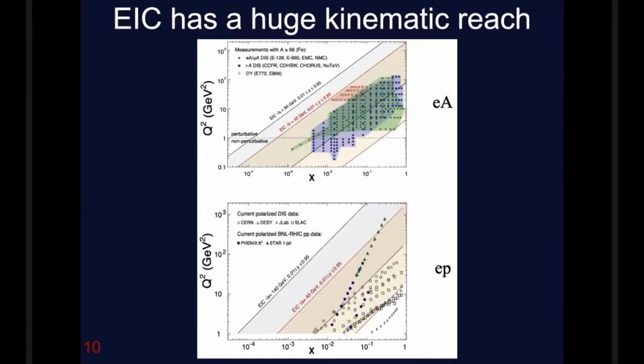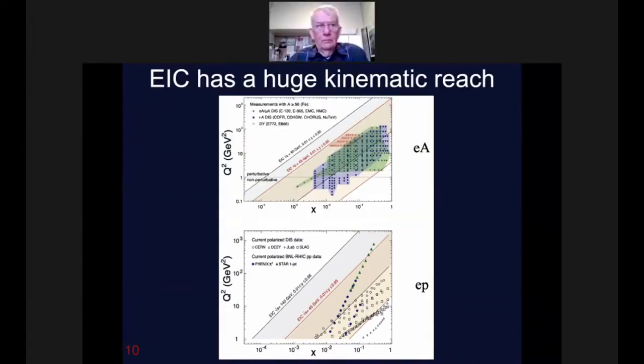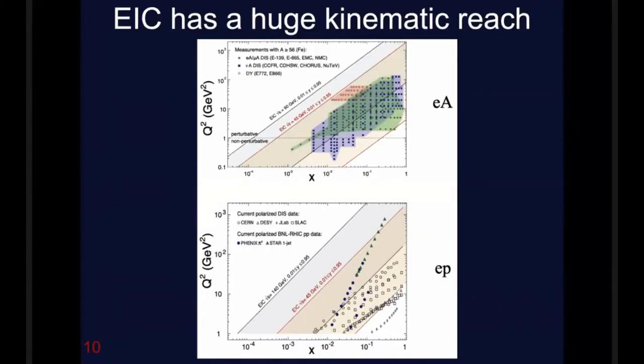It also has a huge kinematic reach. Here I'm looking at the kinematics of the detector. Q squared is the momentum transfer of the electron proton collision and x is the Feynman x, the fraction of the momentum held by the struck parton. The dots and blue and green and purple areas represent existent data, and then these curves represent the range of the EIC at different beam energies, at different center of mass energies. We can see there's this great physics range above what's already existent.